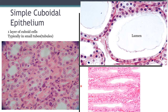Sometimes you can cut the tube lengthwise — a longitudinal section. When you cut the tube in longitudinal section, you see a line of simple cuboidal epithelium below the lumen and another line above it. You'll notice a line of nuclei, another line of nuclei, and the lumen between them. When you look at the cells in that line of nuclei, they're roughly cube-shaped. This is a simple cuboidal epithelium.